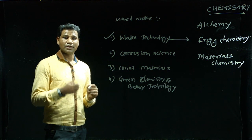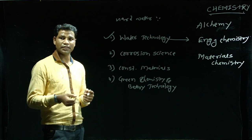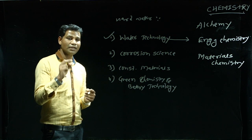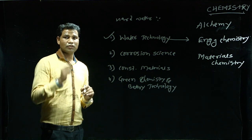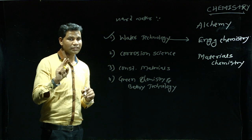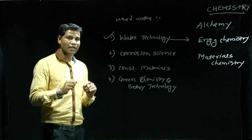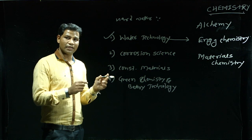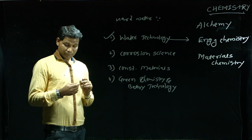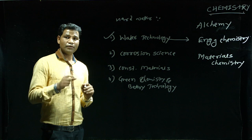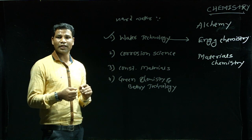The second boiler trouble is scale and sludge. Scale is a hard adherent precipitate formed inside a boiler, which may be problematic as it causes wastage of fuel. Sludge is a loose and slippery mass formed inside a boiler. The third trouble is caustic embrittlement — the boiler becomes brittle due to accumulation of caustic substances like NaOH inside the boiler. The fourth trouble is carry over: during the formation of steam, some water droplets are carried outside the boiler.